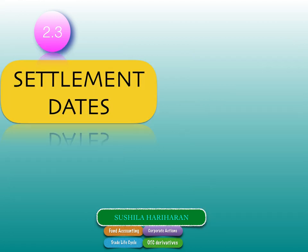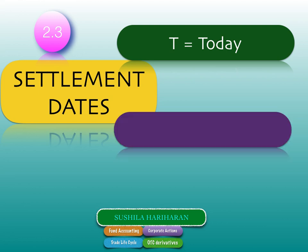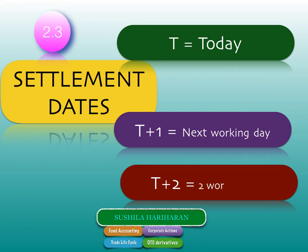Settlement dates in FX markets fall into three categories. Settlement can take place today, which is very rare because the FX market operates across countries, boundaries, and different time zones, making cash settlement challenging. The trade can also settle on the next working day, and the most frequently traded currency pairs settle on T+2 working days from the trade date.